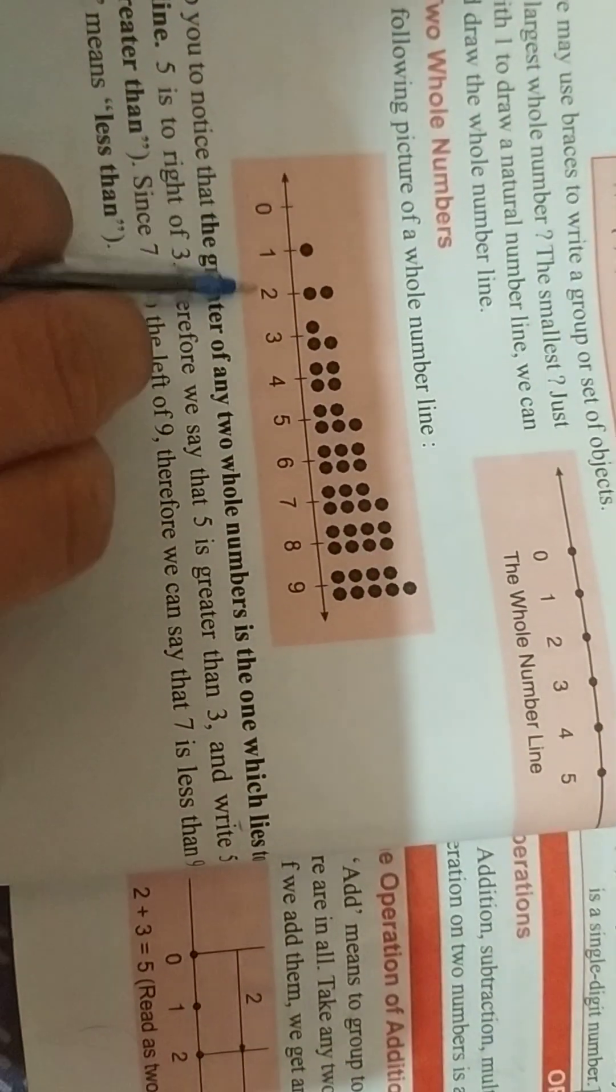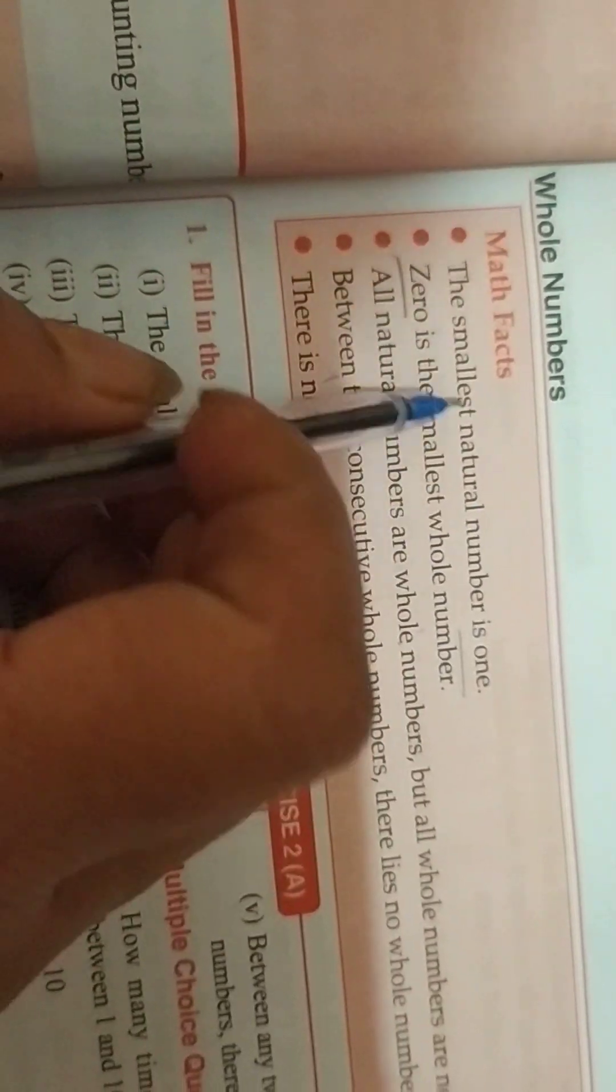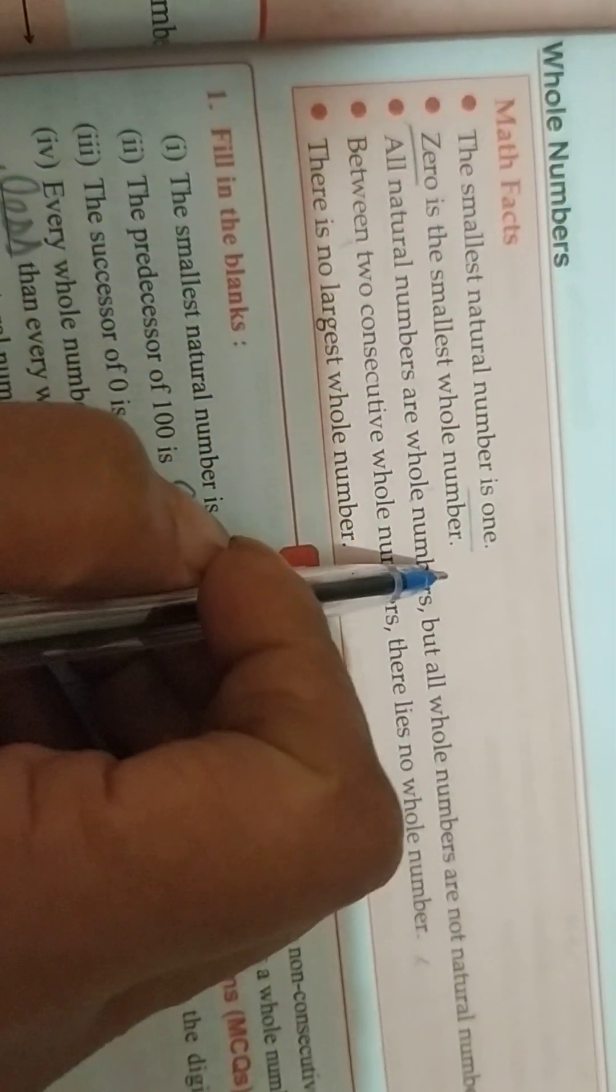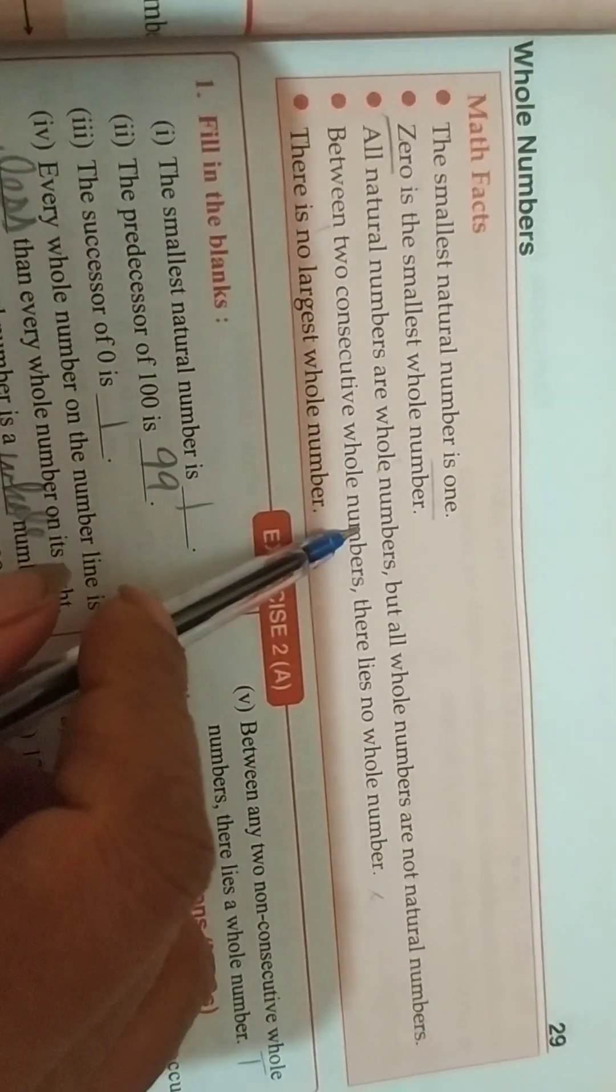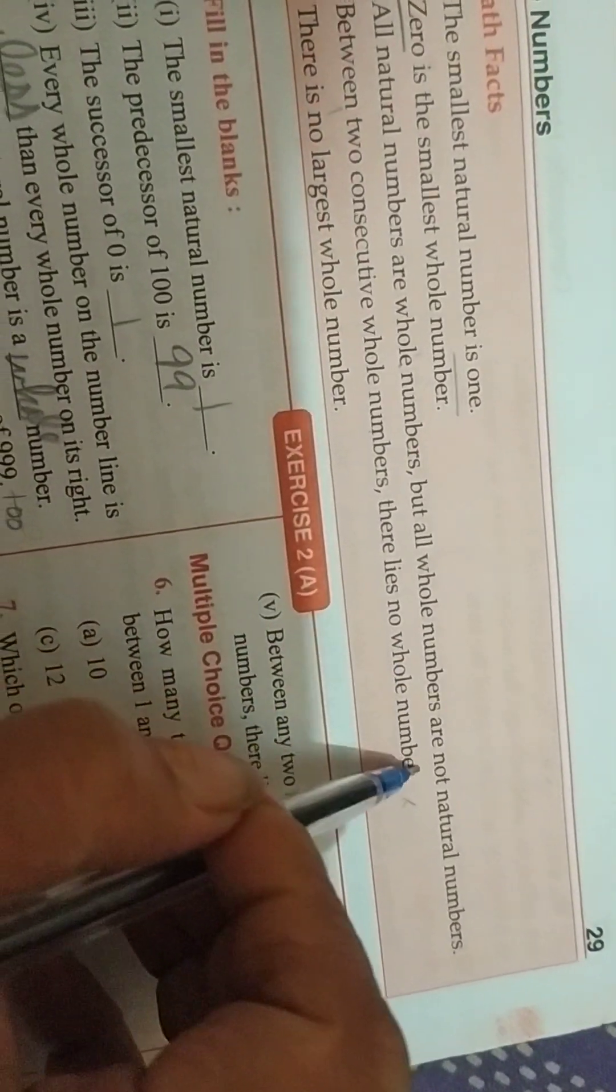You can see number 1 in your book also. The greater of any 2 whole numbers is the one which lies to the right on the line. Now there are some math facts. The smallest natural number is 1, 0 is the smallest whole number. All natural are whole because natural start from 1 and 1 is coming in whole.